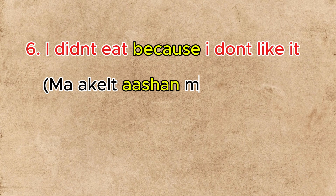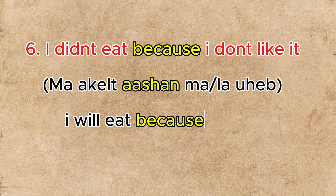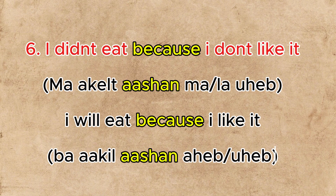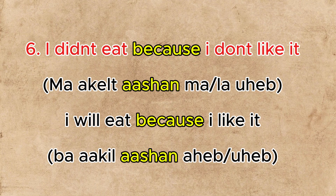Sentence six: 'I didn't eat because I don't like it.' In Arabic: 'Ma akel ashan ma uhheb' or 'la uhheb.' Love and like in Arabic are almost the same — you say 'uhheb' or 'ahheb.' An extra sentence: 'Ba akel ashan uhheb' — I will eat because I like it.